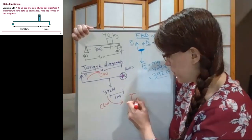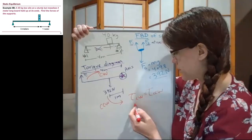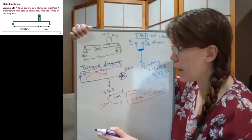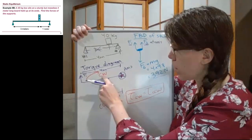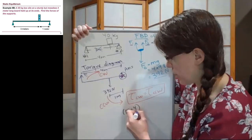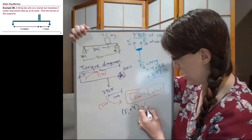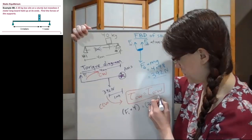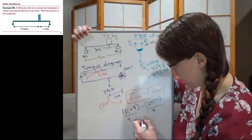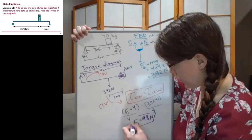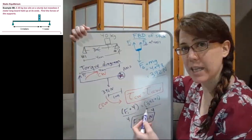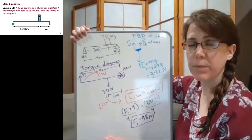We write that torques clockwise equal torques counterclockwise — the first condition for equilibrium. The only clockwise torque is F1 times four meters, and the only counterclockwise torque is 392 times one meter. Dividing both sides by four gives F1 equals 98 newtons. If we had placed the axis somewhere other than a support, both F1 and F2 would appear in this equation, giving one equation with two unknowns — that's what makes the algebra tougher.